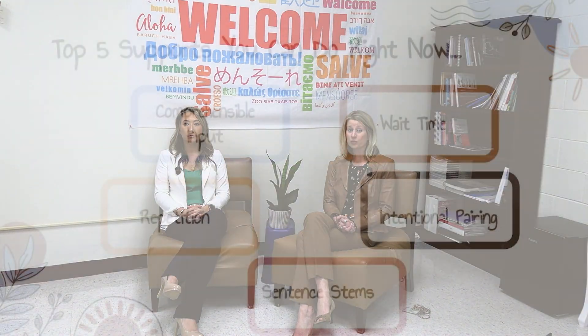The other four strategies that you might choose to investigate today are wait time, intentional pairing, repetition, and sentence stems. You'll be able to learn more about each of these five strategies by reviewing the asynchronous activity linked here.